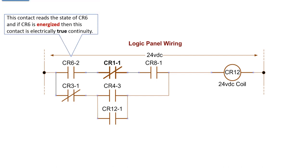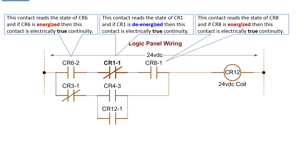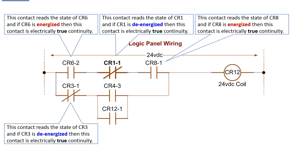This contact reads the state of the coil CR6, and if CR6 is energized, then this contact is electrically true continuity. This contact, which is a normally closed, reads the state of CR1, and if CR1 is de-energized, then this contact is electrically true continuity. If the coil is de-energized, true of on for the first one, true of off for the second. Third one's another true of on. This contact reads the state of CR8, and if CR8 is energized, then you have electrically true continuity. Consequently, same thing for CR3, if it's de-energized, then you have true continuity.